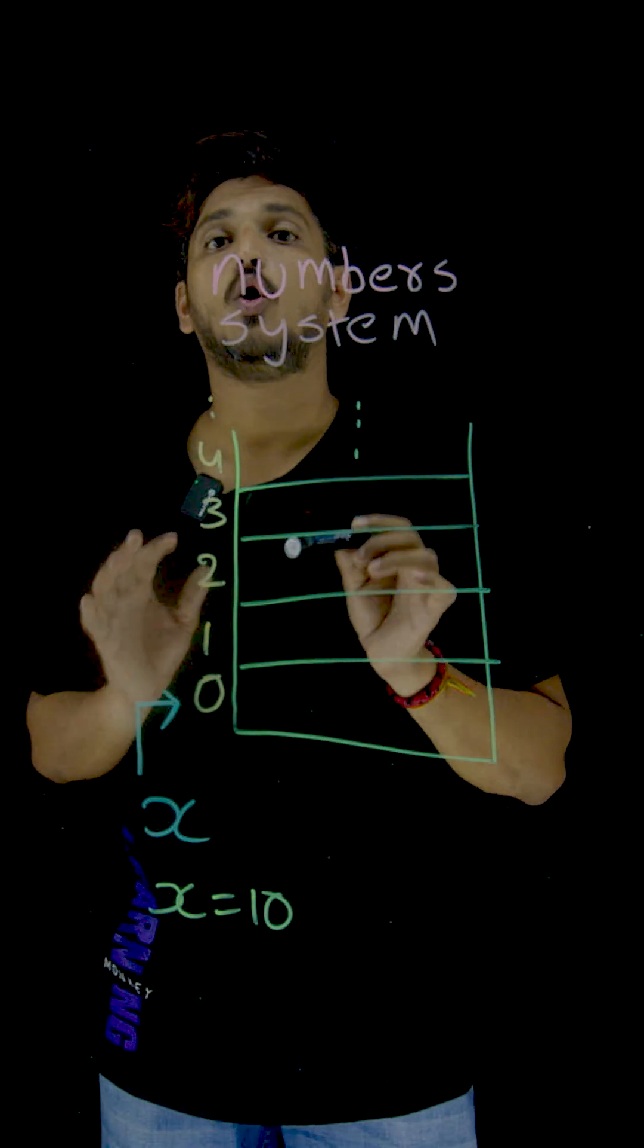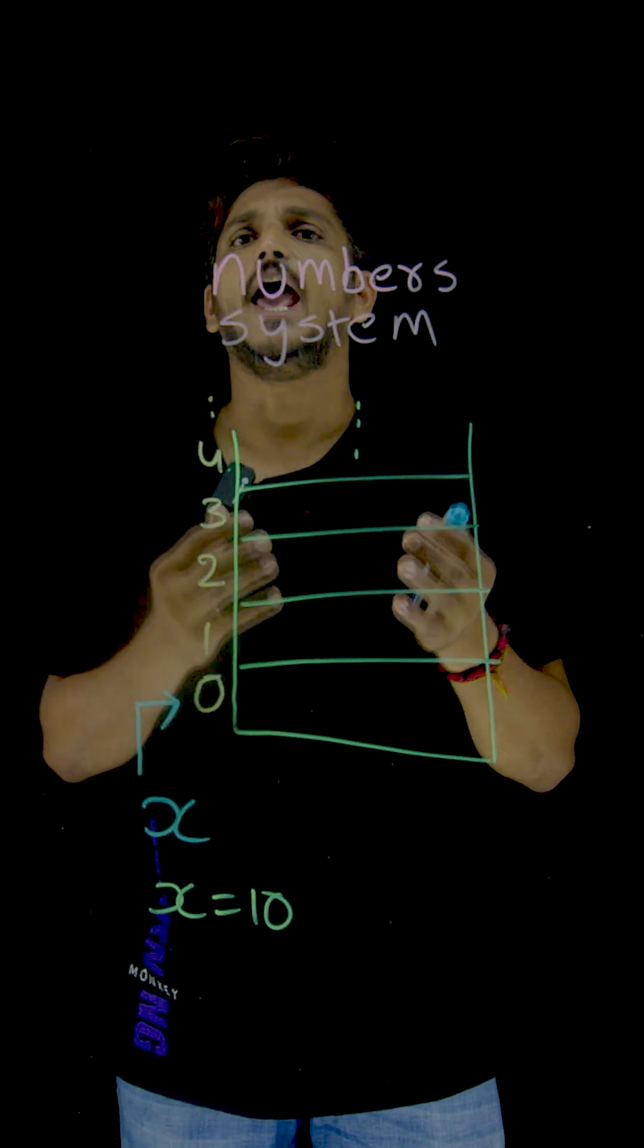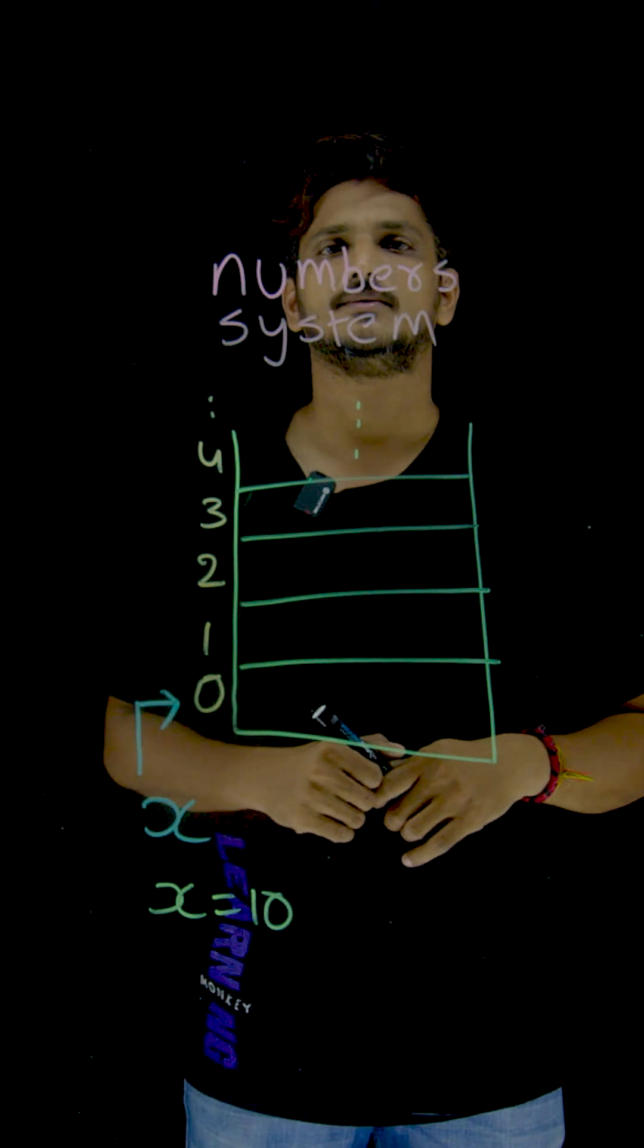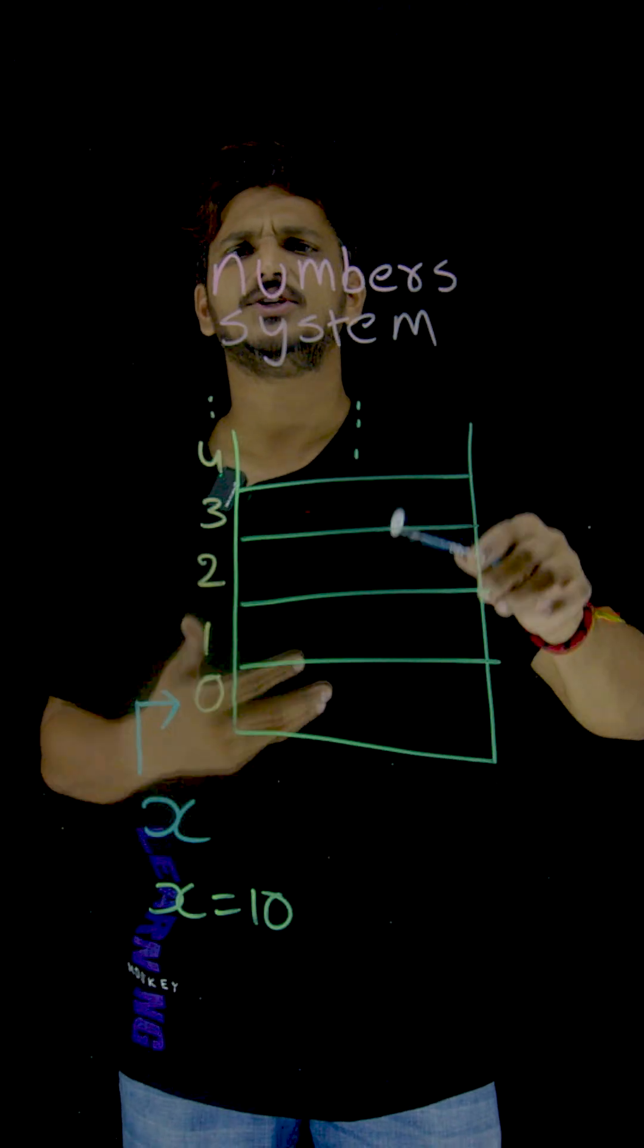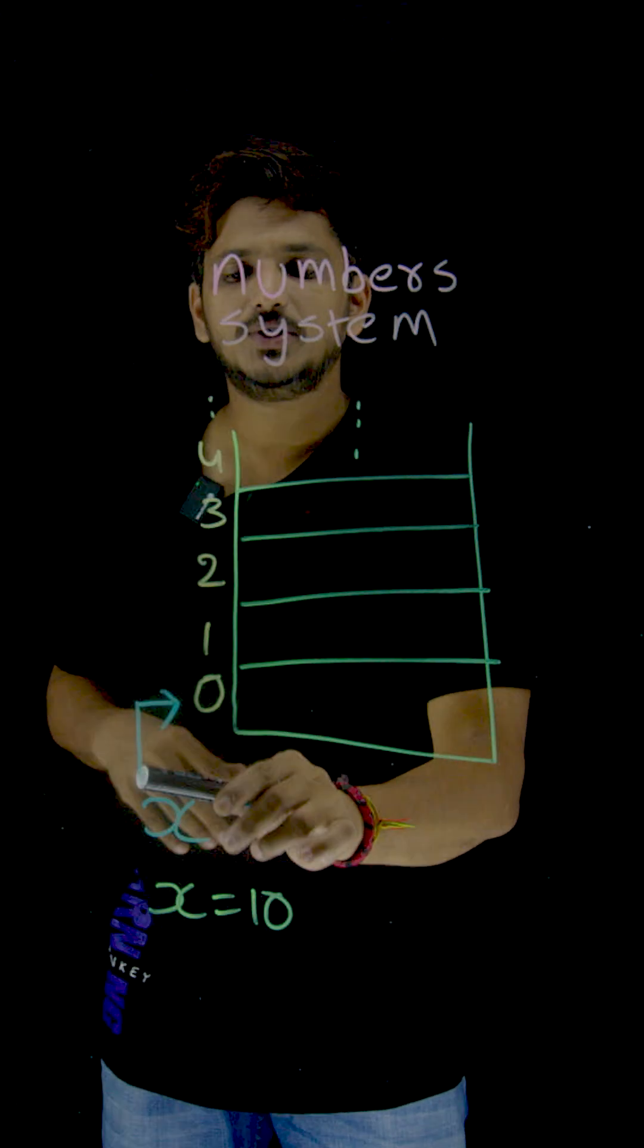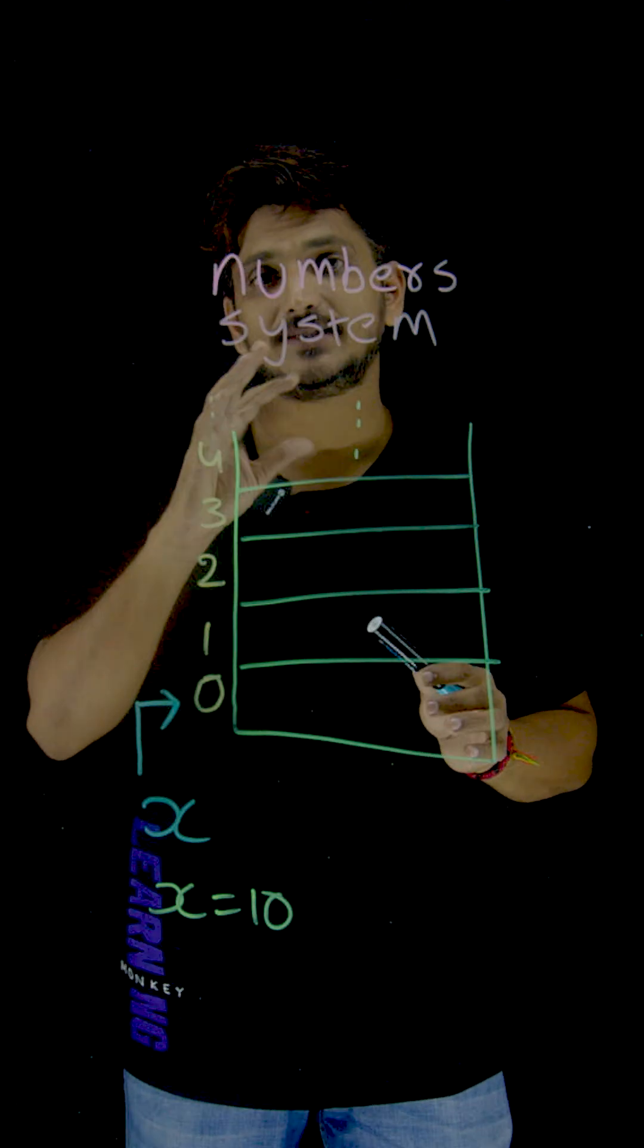Variable is holding a memory location. Assume that 0th memory location has been assigned.